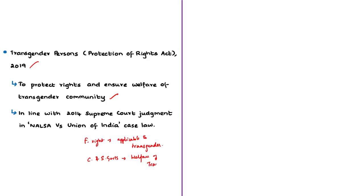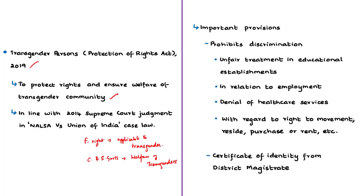Important provisions of the act include: the act defines a transgender person as a person whose gender does not match with the gender assigned to that person at birth. The act prohibits discrimination against transgender persons on grounds such as denial or unfair treatment in educational establishments, denial or termination from employment opportunities, denial or unfair treatment in healthcare services, or denial of rights of movement, residence, or purchase. The act also provides for a certificate of identity — a transgender person may make an application to the district magistrate for a certificate indicating gender as transgender.